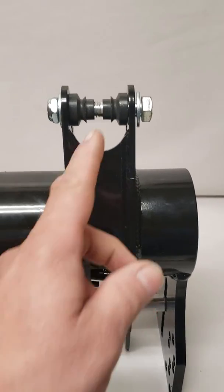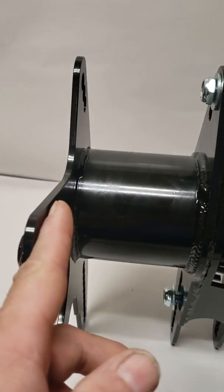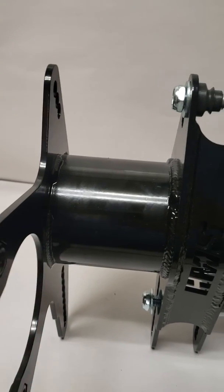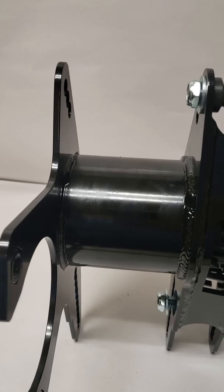Once you do that, you'll get a measurement from the center of your heim joint to the inside of your brake bracket. We want to do the inside because there's different thicknesses of brackets and that can throw things off as well.